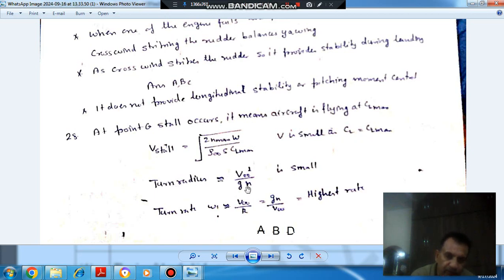And turn radius will also be small. And third is turn rate. Turn rate is V divided by R. So we put the value of R from this. It will be G times N divided by V. So it will be of highest rate.